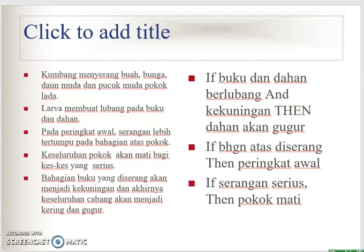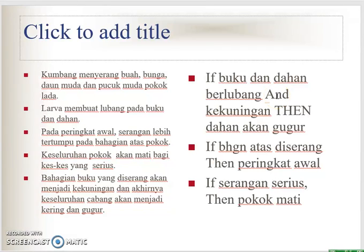So we have: if buku dan dahan berlubang and kekuningan, then dahan akan kukul. We can change this into jika-maka form: jika buku dan dahan berlubang dan kekuningan, maka dahan akan kukul. We can also combine conditions with AND or OR. The second rule: jika bahagian atas diserang, then serangan masih di peringkat awal. The third rule: jika serangan serious, maka pokok akan mati.